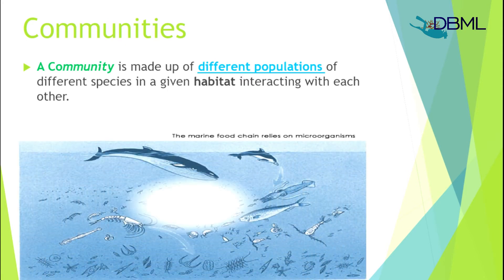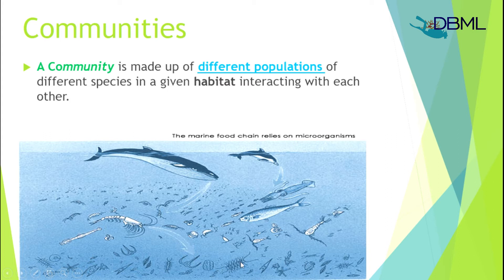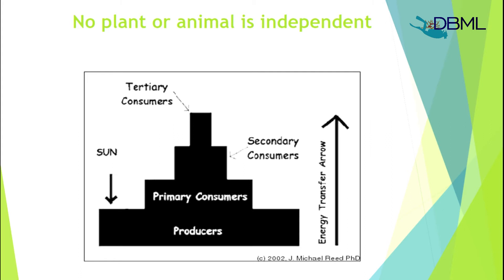Looking at this image, you see different communities and different populations of different organisms. We have phytoplankton at the base that feed the zooplankton, which are fed upon by tiny shrimp and small fish, which are then fed upon by larger sea creatures such as large fish, squids, whales, and dolphins. No animal or plant is independent. The sun provides energy for the producers — the autotrophs — and this energy is transferred up the pyramid of biomass, from primary consumers to secondary, tertiary, and quaternary consumers.